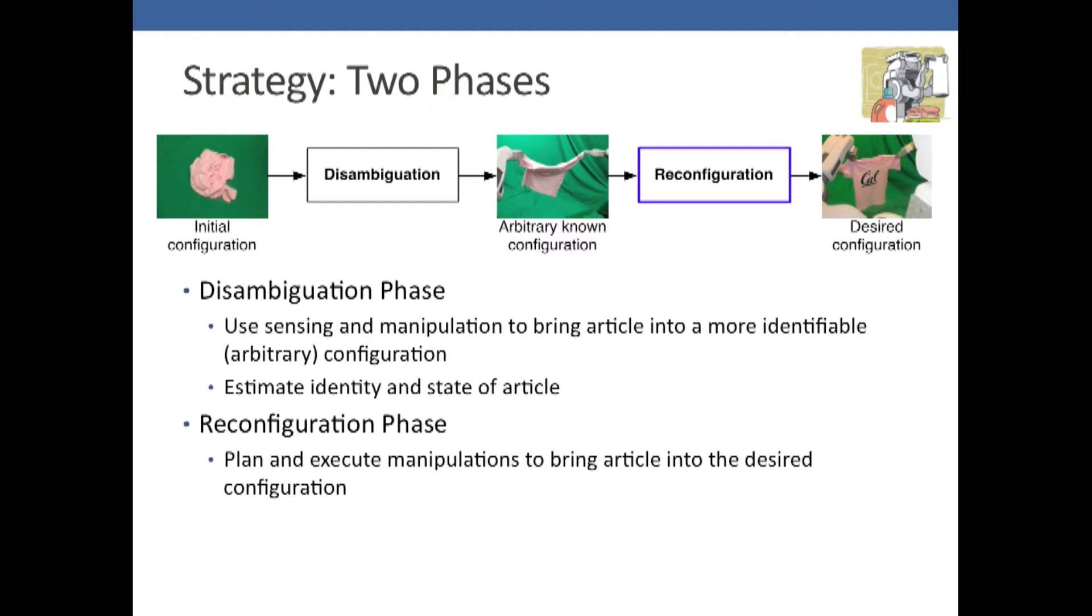For example, we start with some clump of clothing. Through the disambiguation phase, we take it into this arbitrary known configuration. On any given run, it might be in a different configuration at this point, but we know what it is.